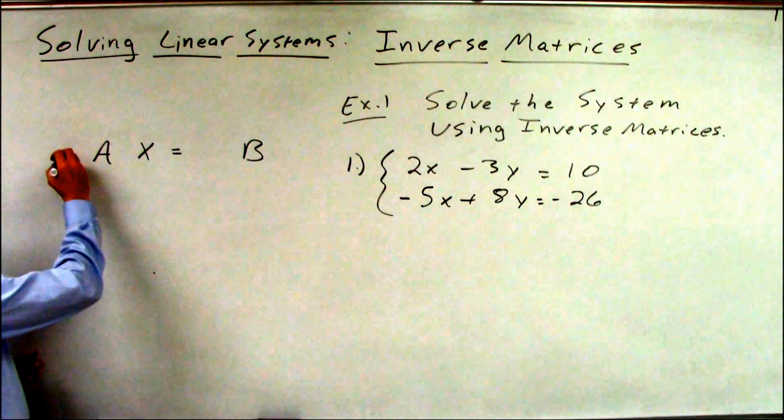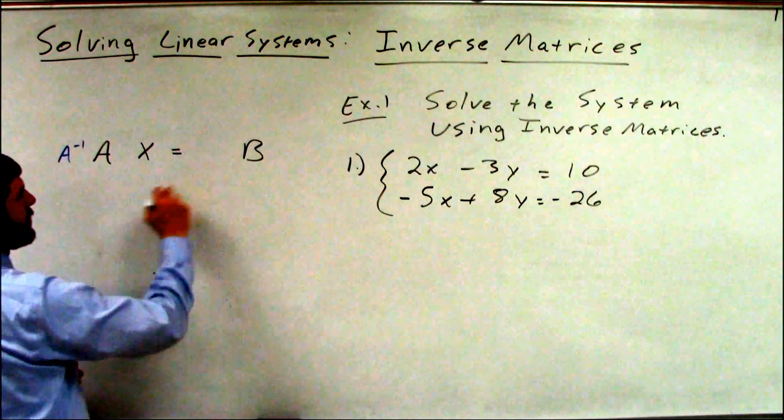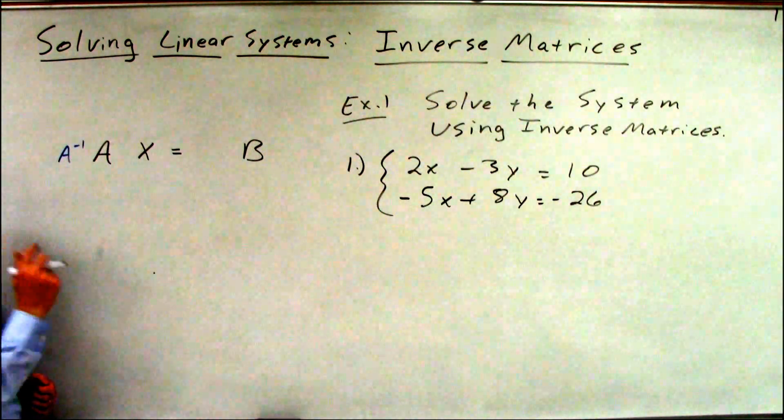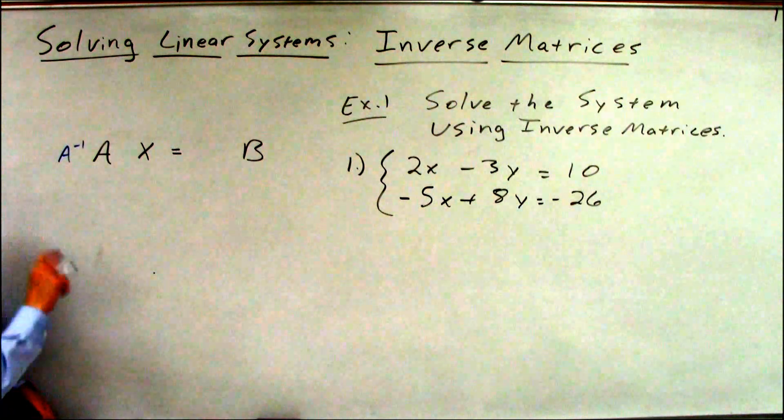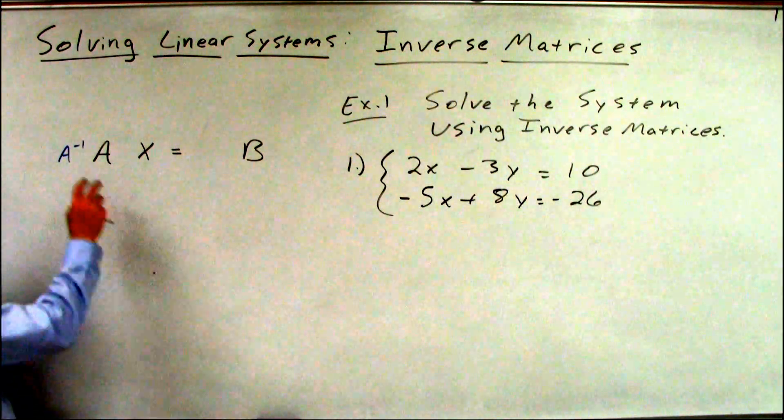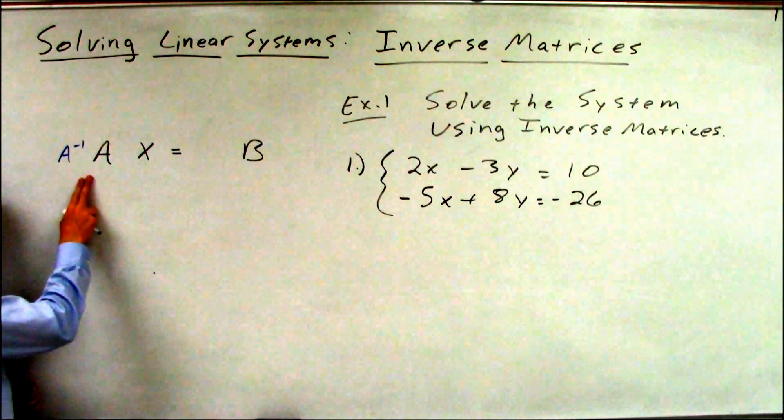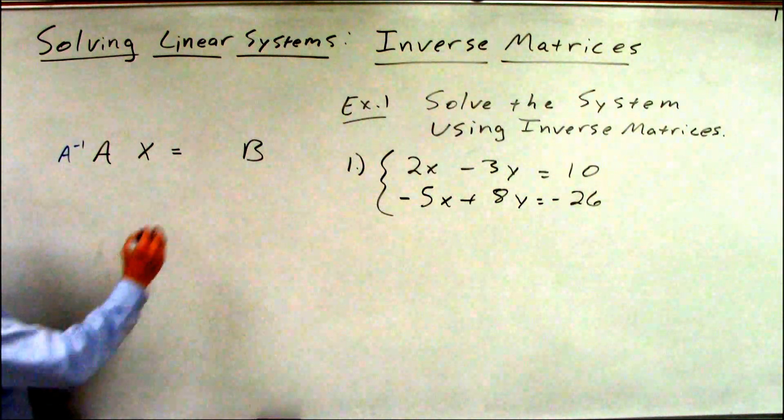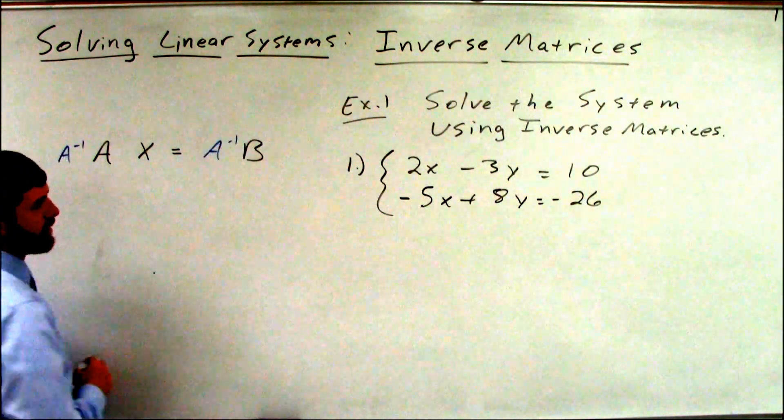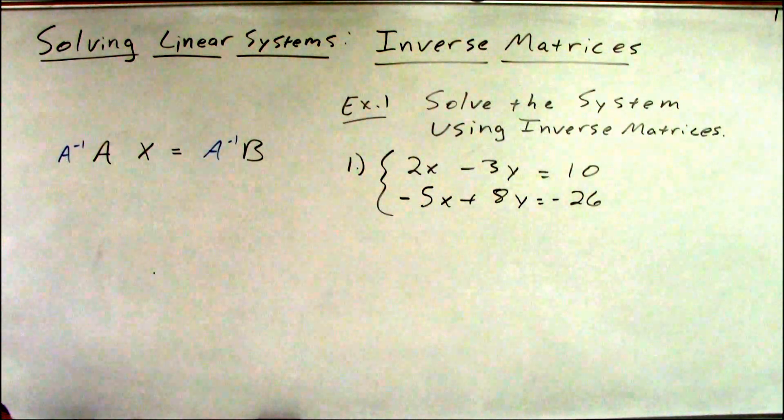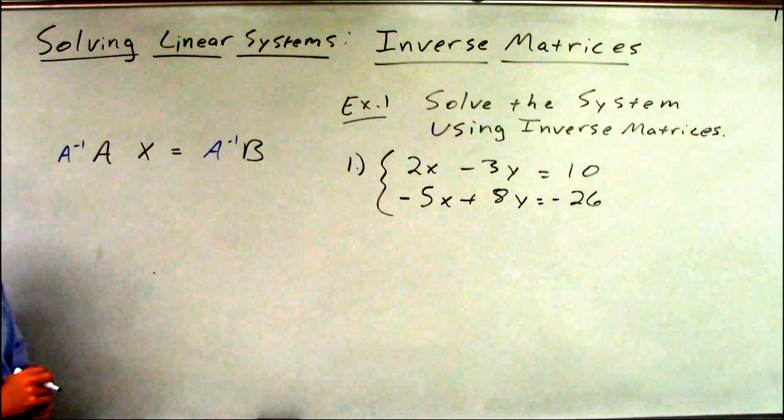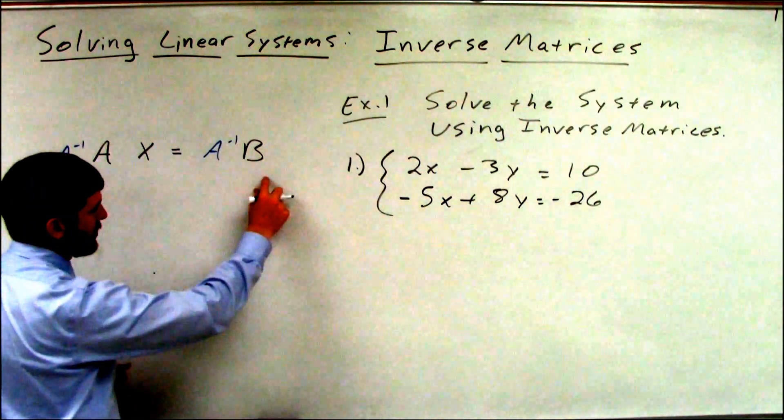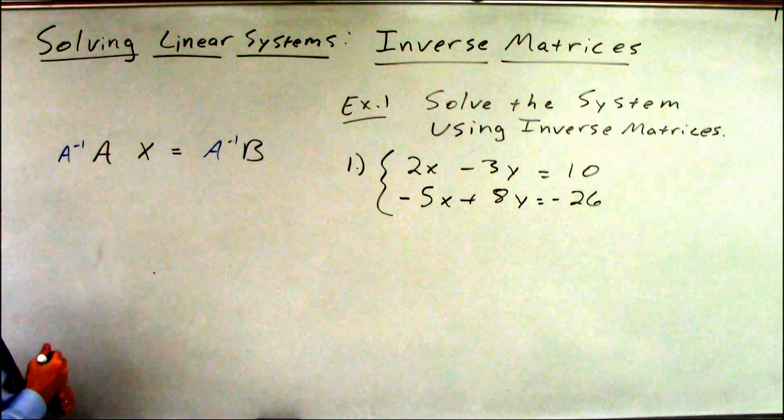So we're going to multiply by A inverse here on the left side. Now we remember that matrix multiplication is order specific. So if A is the first matrix here, the left-hand matrix, A inverse has to be the left-hand matrix there. Just keeping my equation balanced. I increase the left side by a factor of A inverse. I have to increase the right side by a factor of A inverse.